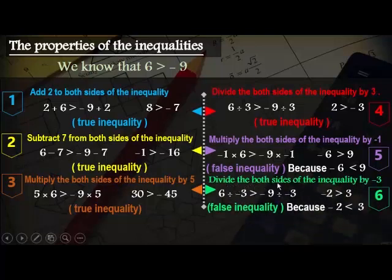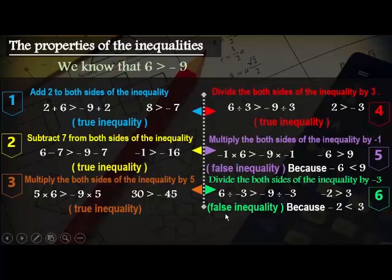Number 6: divide both sides by negative 3. 6 divided by negative 3 is greater than negative 9 divided by negative 3, giving negative 2 is greater than 3 — the inequality is false, because negative 2 is smaller than 3. So if we multiply or divide by a negative number, we change the inequality from true to false.